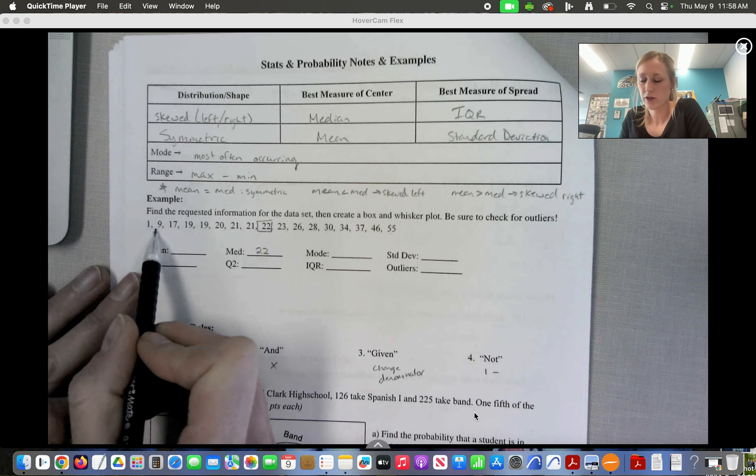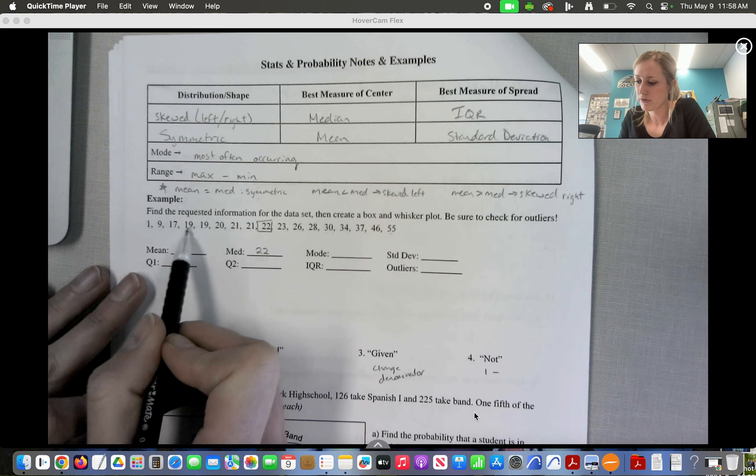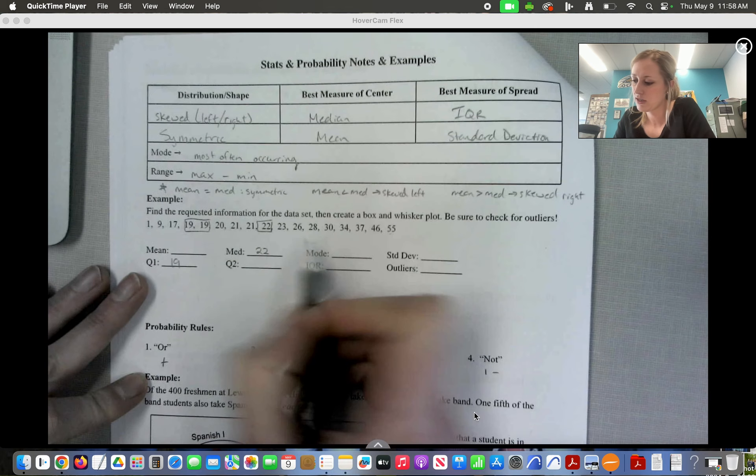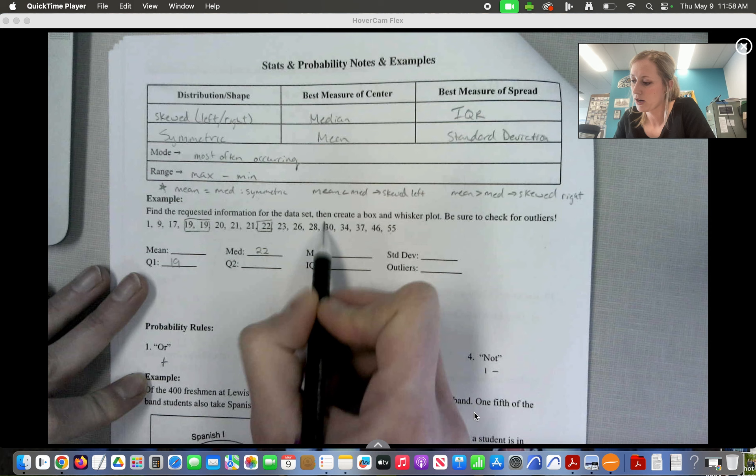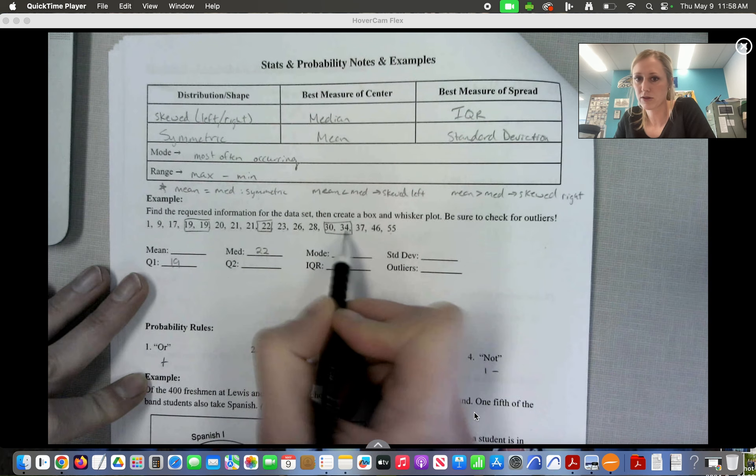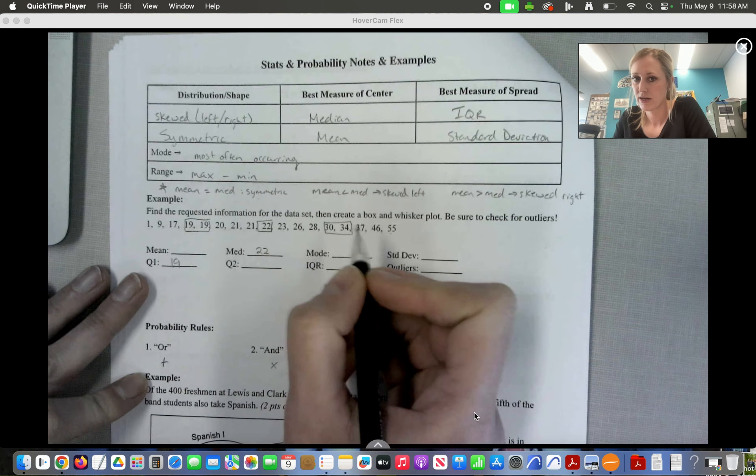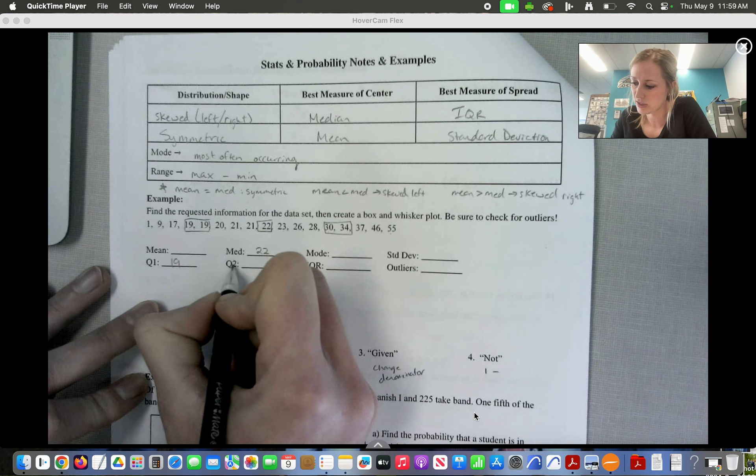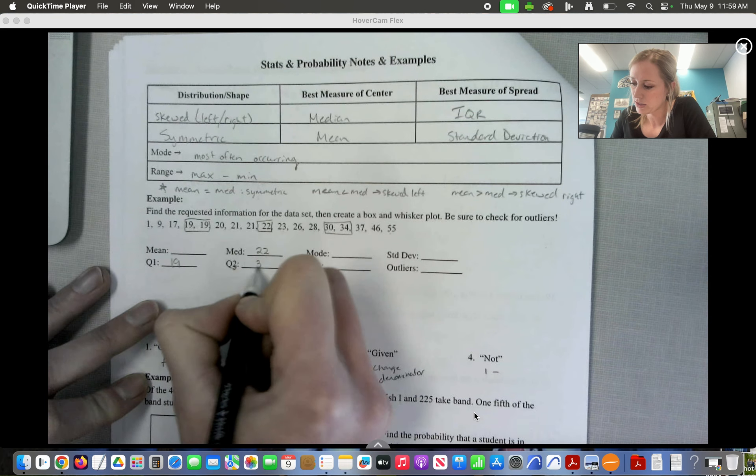Q1 is the middle of the lower half. 1, 2, 3, 4. Two middle numbers, but they're the same, so it's going to be 19. For Q3, 1, 2, 3, 4. Two middle numbers, halfway between 30 and 34 is 32. So Q3 is 32.